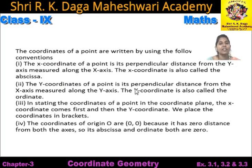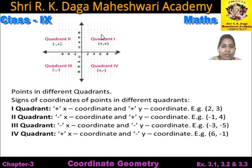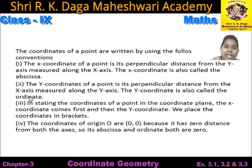The y coordinate of a point is its perpendicular distance from the x-axis measured along the y-axis. The y coordinate is also called the ordinate. Yadi hame y coordinate ki value find karni hai, toh hum perpendicular x-axis pe draw karenge. Us perpendicular ki value hum y-axis se measure karenge. So if we want to find the x coordinate, we draw a perpendicular from y-axis; and if we want to find the y coordinate, we draw a perpendicular from x-axis.